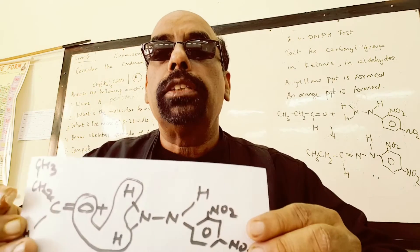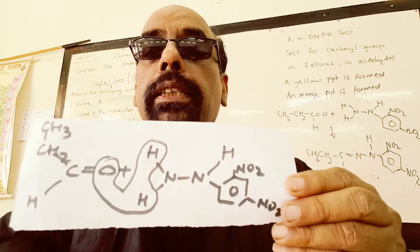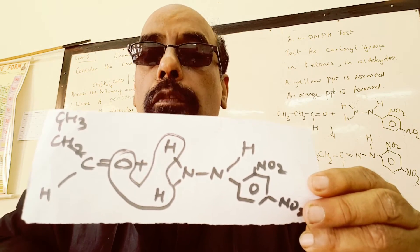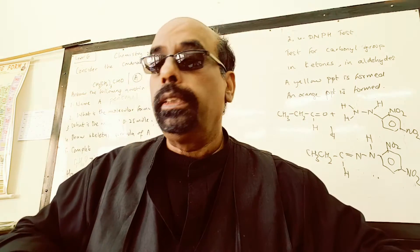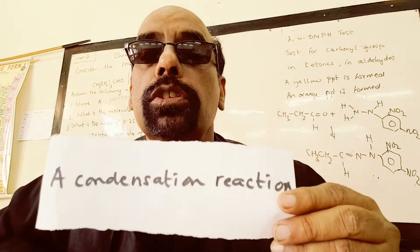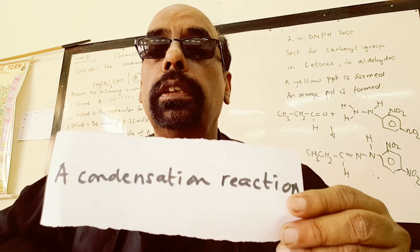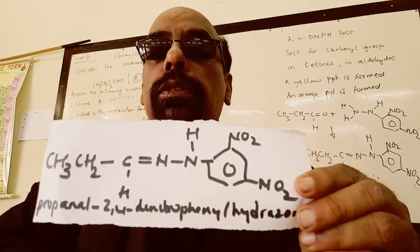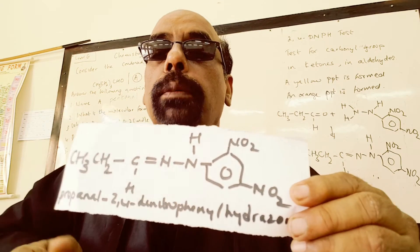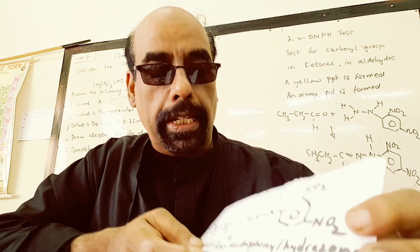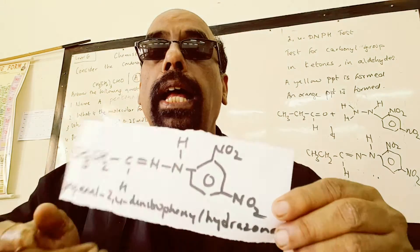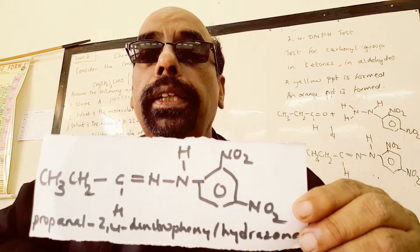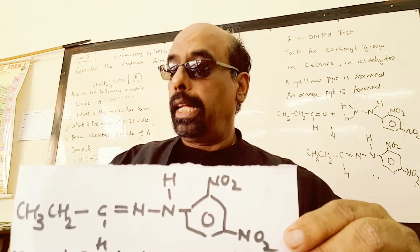The 2,4-dinitrophenylhydrazine has reacted with the oxygen in the carbonyl group of propanal. Water is removed in this reaction, so we call it a condensation reaction. The product is named propanal 2,4-dinitrophenylhydrazone — the yellow precipitate is propanal 2,4-dinitrophenylhydrazone.